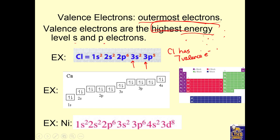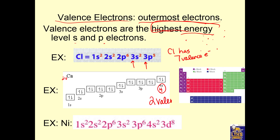Calcium has 20 electrons. Counting through its electron configuration: 2, 4, 6, 8, 10, 12, 14, 16, 18, 20. The highest energy level calcium uses is the fourth energy level, and there are no P electrons in that level for calcium — so calcium has two valence electrons. Nickel's highest energy level is also the fourth energy level, and with 4s2 and no 4p, nickel also has two valence electrons.